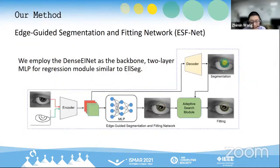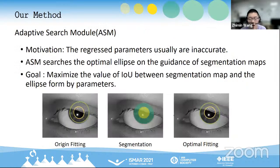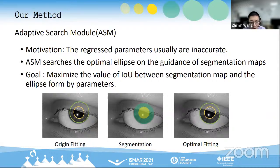ESFNet utilizes the edge maps to get eye segmentation and ellipse parameter fitting. The encoder, decoder, and regression model can be arbitrary. In this paper, we employ the DenseNet as the backbone and a two-layer MLP for the regression model, similar to ELSEG. We found the regressed parameters are usually inaccurate. To this end, we propose ASM to search the optimal ellipse guided by the segmentation maps. The goal is maximizing the IOU between the segmentation map and the ellipse formed by the parameters.